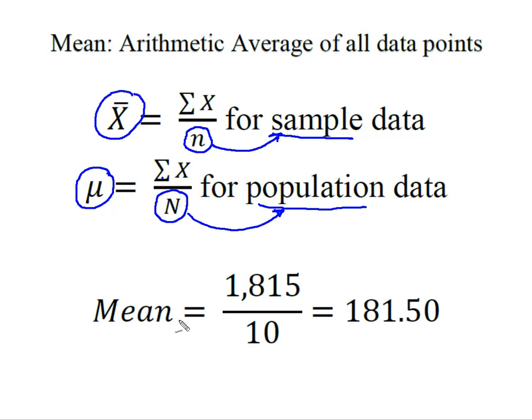So I've calculated the mean. I added up my speeds. Came up with 1815. I had 10 observations. Divided that out and I came out to 181.50.